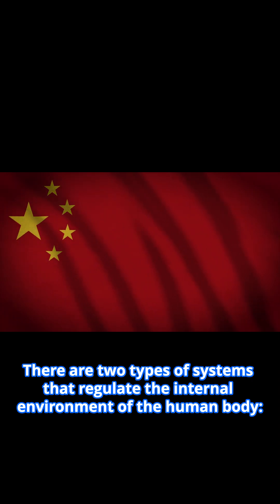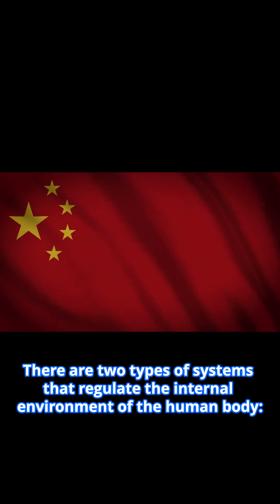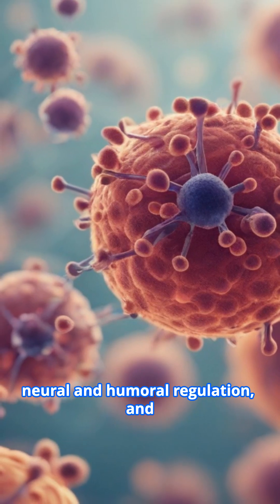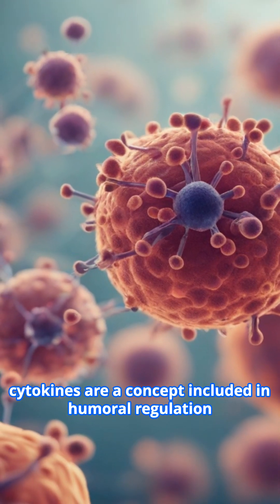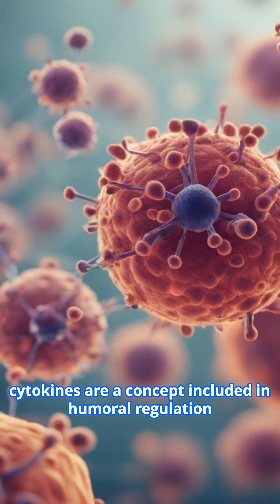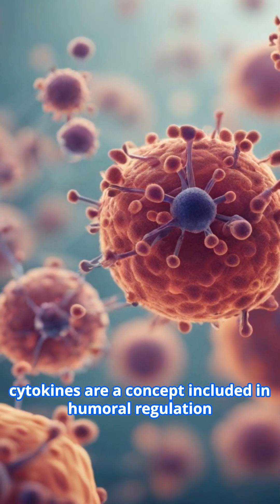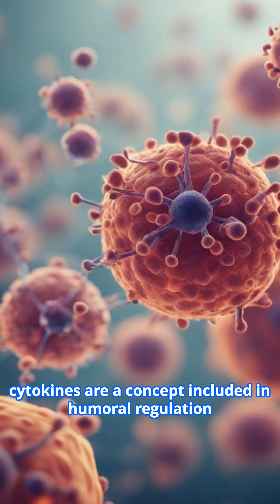There are two types of systems that regulate the internal environment of the human body: neural and humoral regulation. Cytokines are a concept included in humoral regulation.